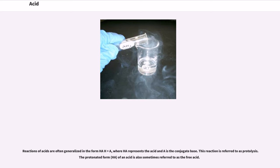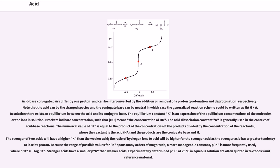Reactions of acids are often generalized in the form HA ⇌ H+ + A-, where HA represents the acid and A- is the conjugate base. This reaction is referred to as protolysis. The protonated form (HA) of an acid is also sometimes referred to as the free acid. Acid-base conjugate pairs differ by one proton and can be interconverted by the addition or removal of a proton—protonation and deprotonation, respectively. Note that the acid can be the charged species and the conjugate base can be neutral, in which case the generalized reaction scheme could be written as HA+ ⇌ H+ + A.